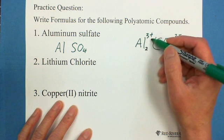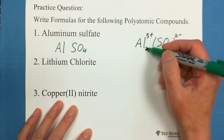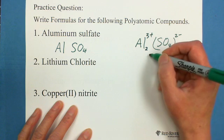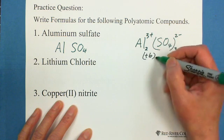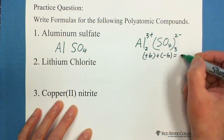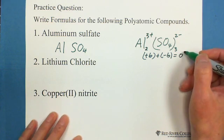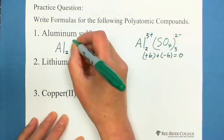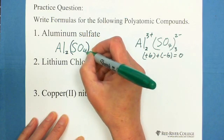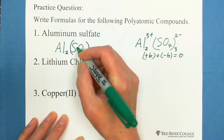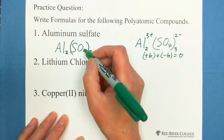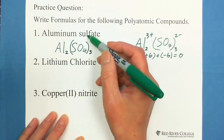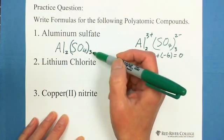Aluminum, each ion with 3 positive charges, 2 ions, total is positive 6. So positive 6 plus negative 6 equals 0, neutral. That's why the formula is Al2(SO4)3. We need to put brackets because SO4 is a polyatomic ion. So aluminum sulfate is Al2(SO4)3.